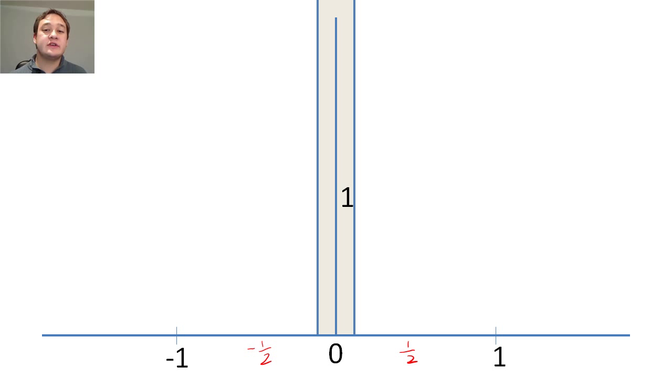A Dirac delta function is essentially such a rectangle, with nearly 0 width and infinite height. We represent the delta function simply as an arrow labeled by its area.